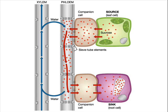Enzymes maintain a concentration gradient from the source to the sink by changing the dissolved substances at the sink — by breaking them down or making them into something else. This makes sure there is always a lower concentration at the sink than at the source.